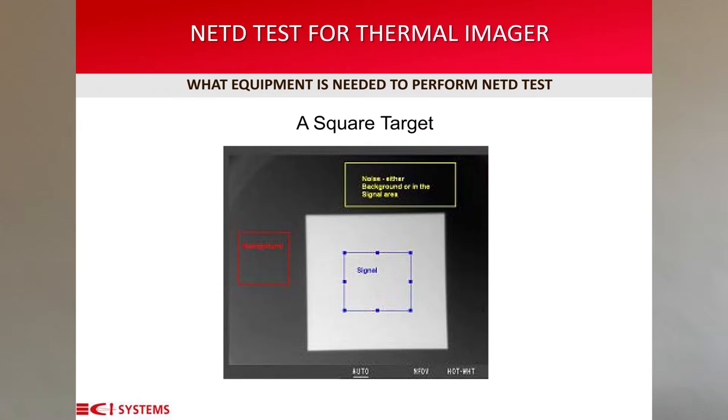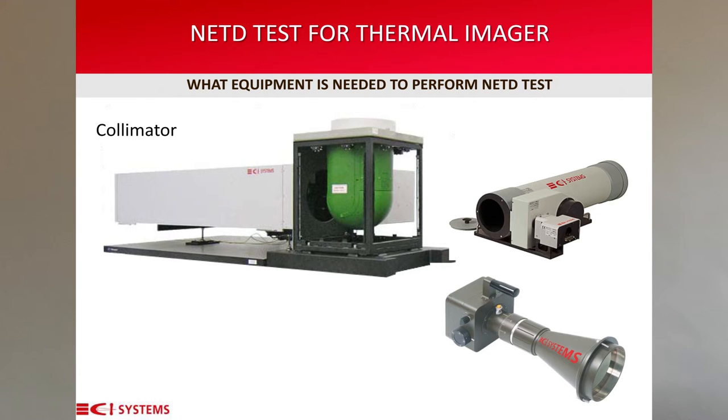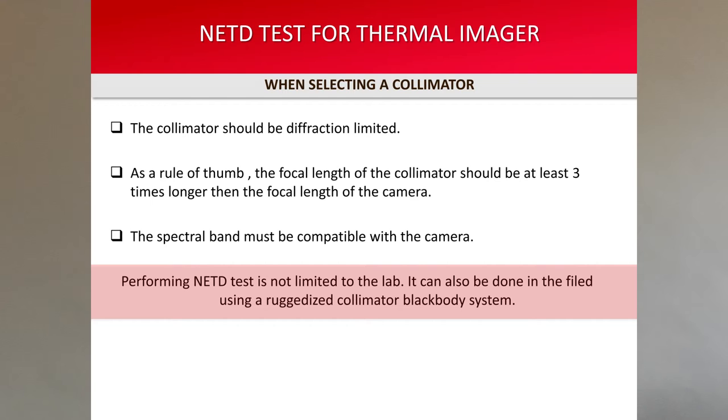To perform a NETD test, a square target is commonly used, with a large enough area to place the region of interest (ROI) for both the background and the signal. A collimator is an optical device that simulates images placed on the focal plane at the distance of infinity — that is, it projects images focused at infinity. When selecting a collimator: one, it should be diffraction limited so as not to degrade quality; two, as a rule of thumb, the focal length of the collimator should be at least three times longer than the focal length of the camera; three, the spectral band must be compatible with the camera. For example, at CA Systems we use mirror-based collimators with a spectral band of 0.4 to 14.6 microns.